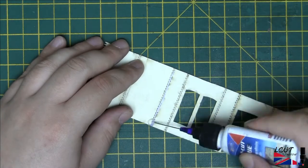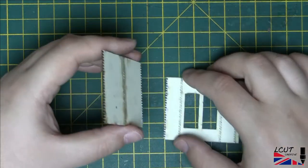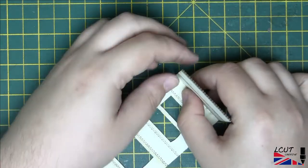To ensure neat corners, test fit first. Apply glue to the inside face of the interlocking portion of the part, then slide together. Use a ruler to gently seat the parts together.